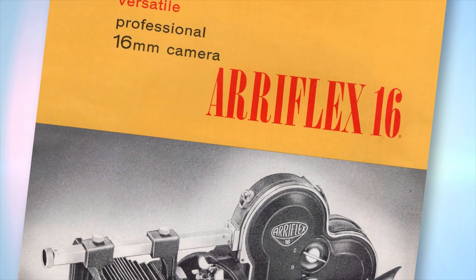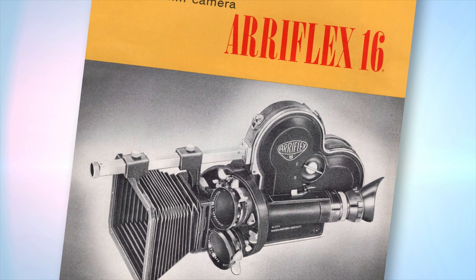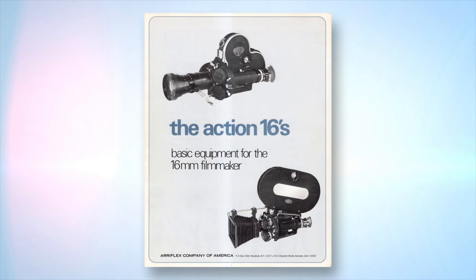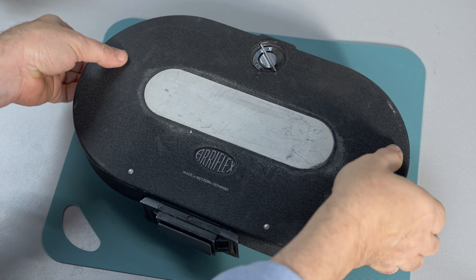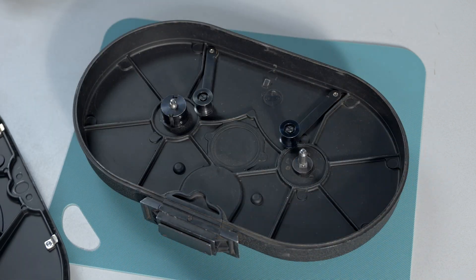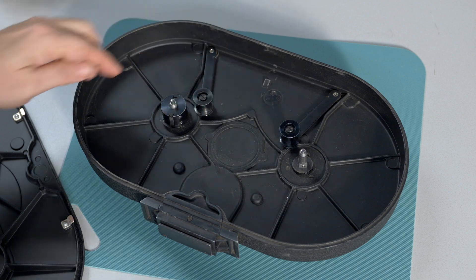I then started looking at cameras. There are some great 16mm movements out there, but using a camera as the basis of a transfer system has a couple of problems. First, most are designed for only 400 foot reels, and the few that handle 1200 foot reels are really hard to find.